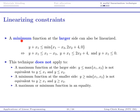Similarly, if you have a minimum function at the larger side, then you can also linearize it. For example, if this expression is less than or equal to the minimum of these three terms, then it would be less than or equal to each of them, and the opposite is also true. Each term can still be a function of variables and parameters.